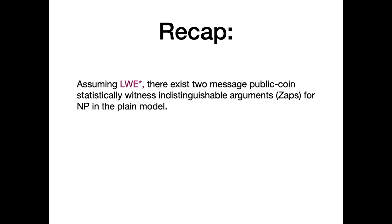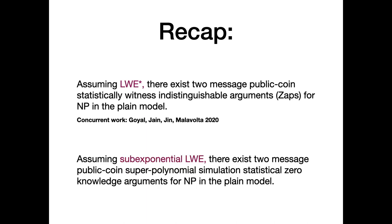To recap, we show that there exist statistical zap arguments for all languages in NP in the plain model. There was a concurrent work by Goyal, Jain, Jin, and Malavolta which gets the same result. We also observe that the same protocol, essentially unmodified, satisfies statistical zero knowledge under superpolynomial simulation, achieving the first two-message public coin SPS statistical zero knowledge argument for all languages in NP in the plain model. I'll refer you to the paper for details. Thank you.